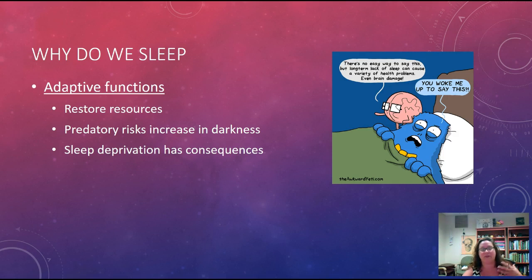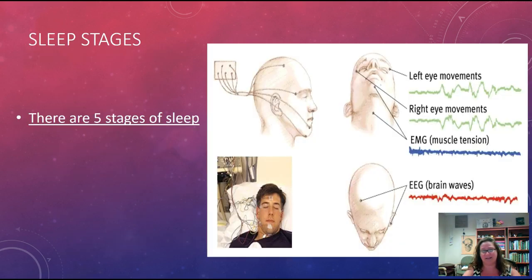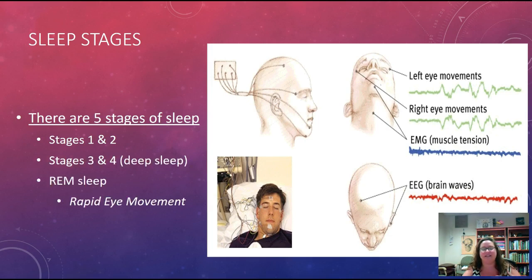Sleep has major cognitive functions — it helps organize cognition, memory, attention to detail, judgment, and decision-making, and helps us remember new tasks we've learned. We have multiple stages of sleep. Stages one and two are lighter sleep — if woken during these stages you might not even report being asleep. Stages three and four are deeper sleep, and REM sleep is when we're actually dreaming — rapid eye movement sleep.